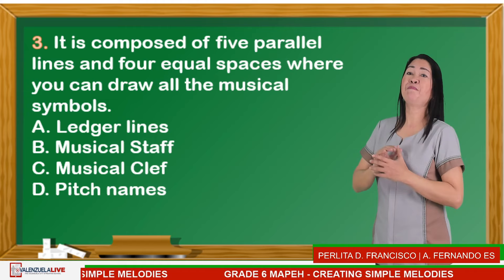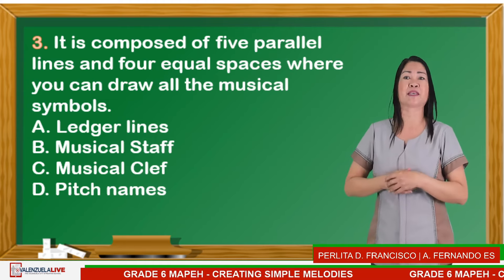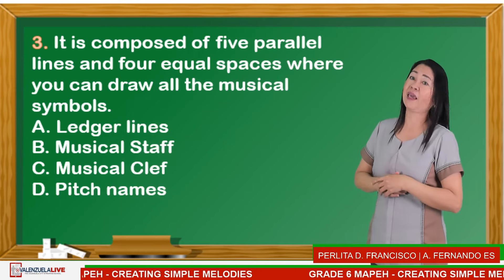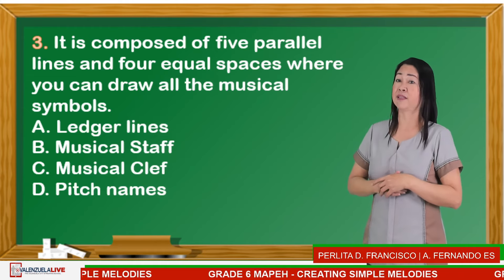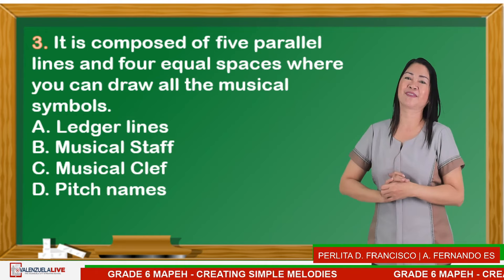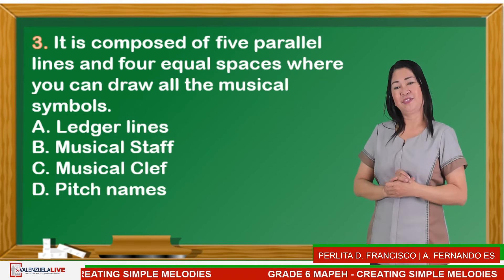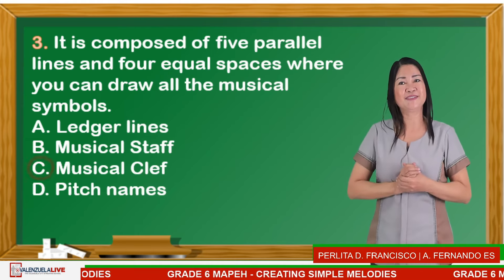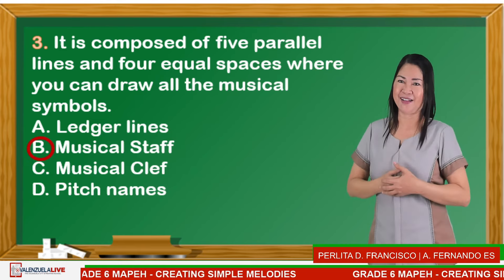Number three: It is composed of five parallel lines and four equal spaces where you can draw all the musical symbols. Is it A — ledger lines, B — musical staff, C — musical clef, or D — pitch names? Time is up. The correct answer is B — musical staff.